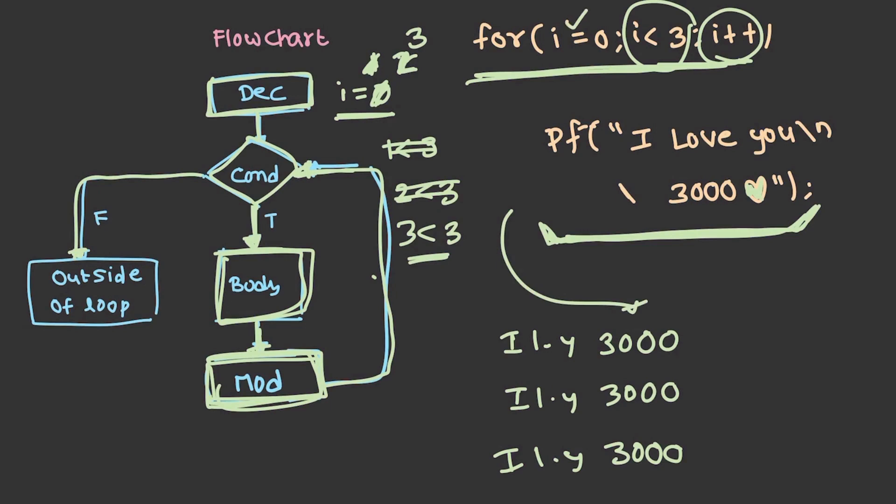This is how for loop is executed. You just need to understand the flowchart. Initially, the declaration will be made, followed by that it will check the condition and then it will enter the loop. After that, the modification happens and then it goes to the condition. It never enters the declaration again. The declaration happens only once and the condition will be executed and the body will be executed accordingly.